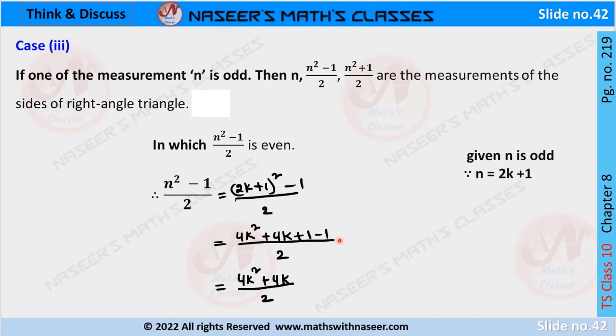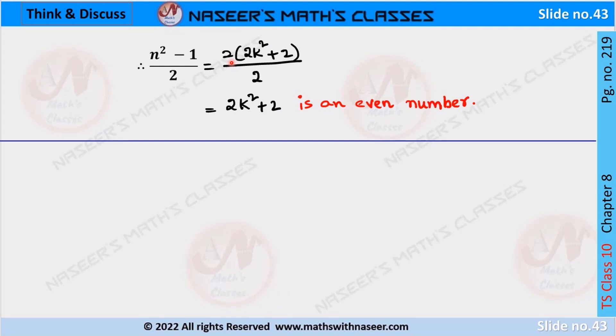We can now cancel plus 1 and minus 1, then it can be written as 4k squared plus 4k by 2. Let's take out 2 common, then it can be written as 2 into 2k squared plus 2k by 2. We can cancel 2 and 2, then we get 2k squared plus 2k. This is an even number.